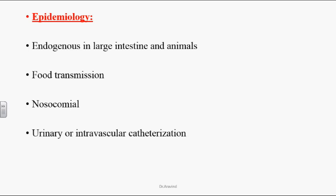Epidemiology: these organisms are found endogenously in the human large intestine as well as in animals. Humans get this infection through food transmission and from hospital environments. Most of these organisms in hospitalized environments are antibiotic resistant, leading to nosocomial infections. Main predisposing factors include urinary or intravascular catheterizations, surgical procedures, and ICU patients are particularly susceptible.